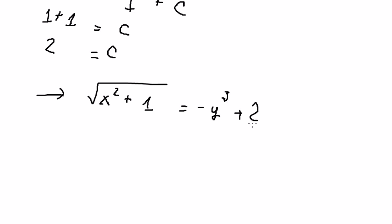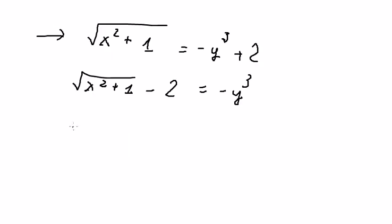Later that, we put number 2 on the left. We put the negative on both sides, so we get 2 minus the square root of x squared plus 1.